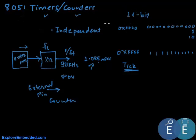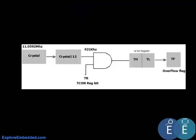Typically 11.0592 MHz crystal is used, giving a timer frequency of 921 kHz and a tick period of approximately 1.085 microseconds. The timer/counter is a 16-bit register, and whenever it counts from 0 up to 2^16 and overflows, an overflow flag bit is set.